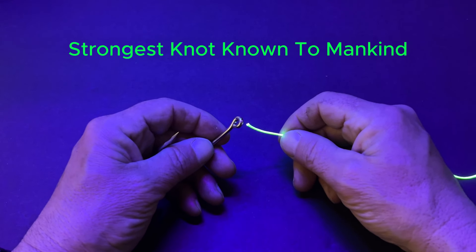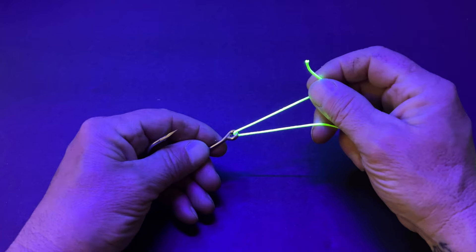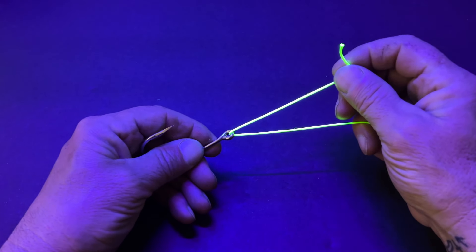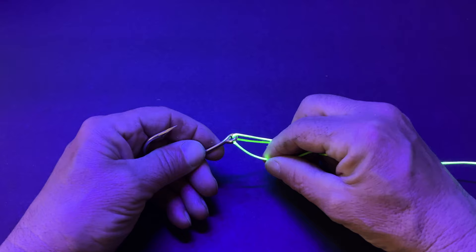The Trilene Knot. Put the line through the eye of the hook and pull it back six inches. Bring the tagline back through the eye of the hook again.